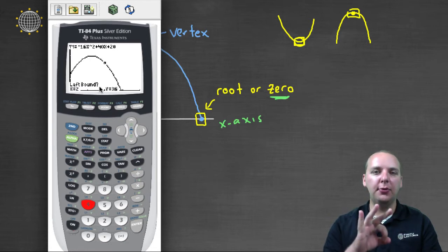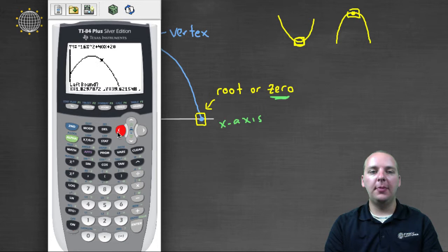And then it's going to ask you three questions. It's going to ask for a left bound. That means just put the cursor, you see this little tracking cursor. Put the cursor anywhere to the left of the vertex. It could be here, or here, or here, it doesn't matter. Push enter.